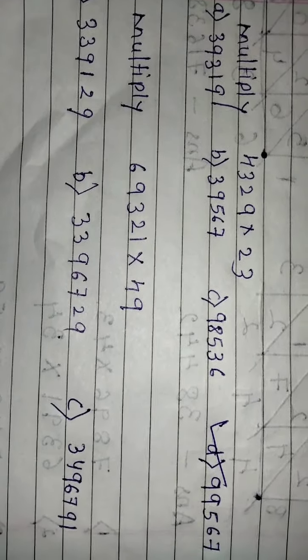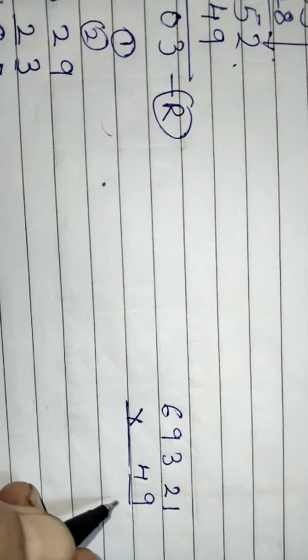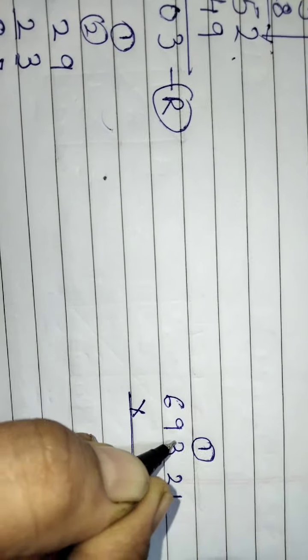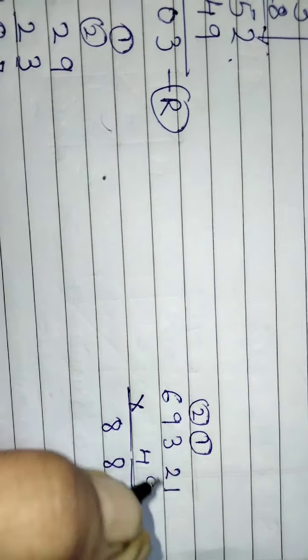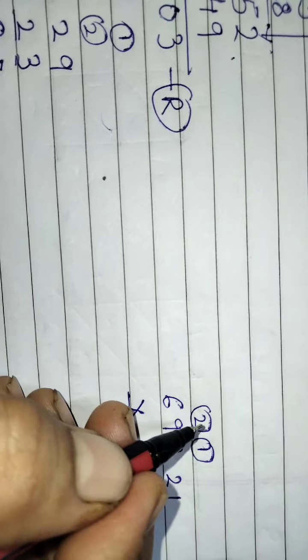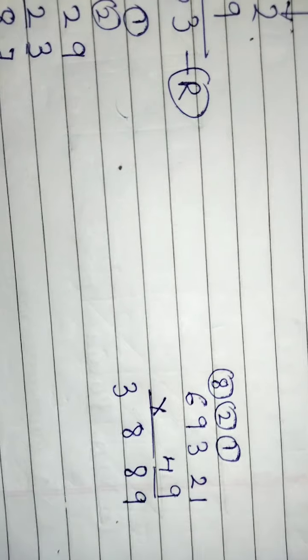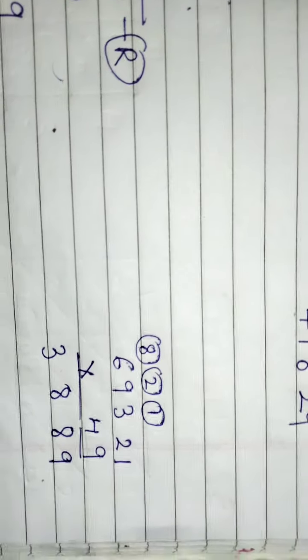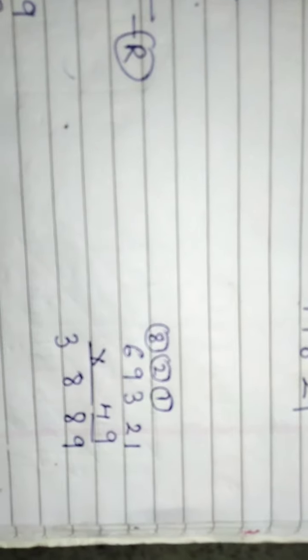Now next multiplication. 69321 into 49. 9 ones are 9, 9 twos are 18. 9 threes are 27 plus 1, 28. 9 nines are 81, 82, 83. 9 sixes are 54 plus 8, counting to 62.